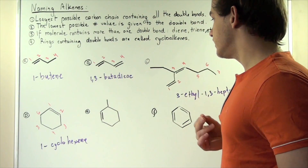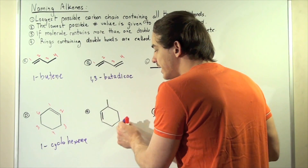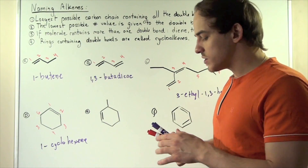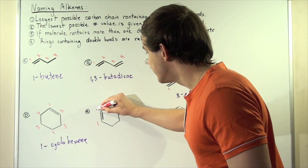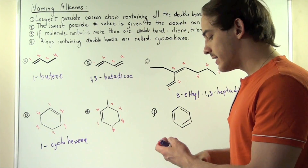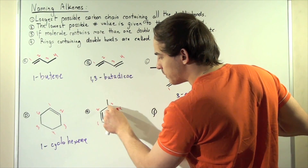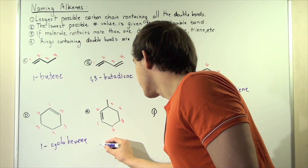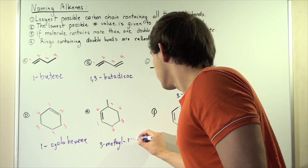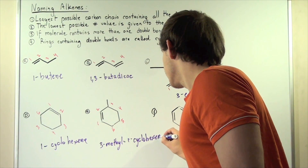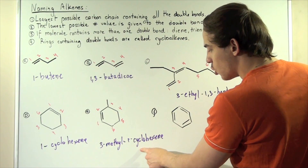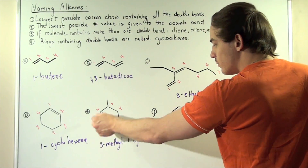In compound E, I want to label the compound so that my double bond gets the lowest possible number value and the methyl group also gets the lowest possible number value. Beginning on this side: one, two, three, four, five, six — a six-carbon ring. Notice the methyl group is found on the third carbon. So we name it 3-methyl-1-cyclohexene: '3-methyl' means the methyl group is on carbon three, and '1-cyclohexene' means the double bond is on carbon one with a ring structure.